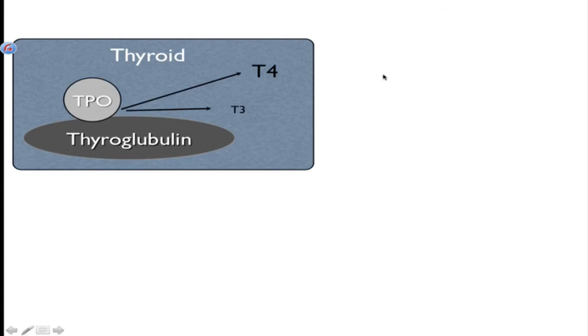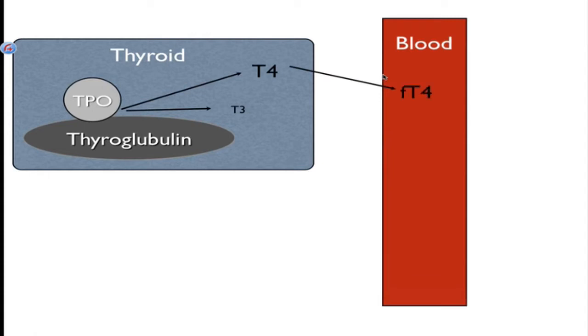Now, what happens from here is T4 is released into the bloodstream from the thyroid gland, and you have what I call free T4. That's what that little F is, free T4. And what that essentially means is that there's bound hormone in the blood and there's free hormone in the blood, and that's going to become important here in just a minute.